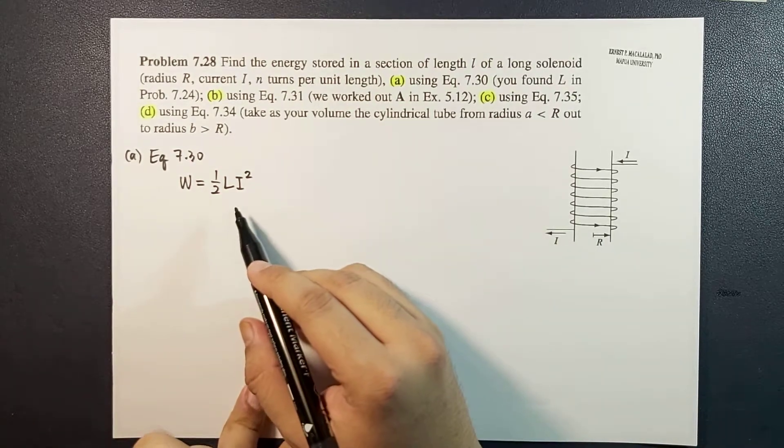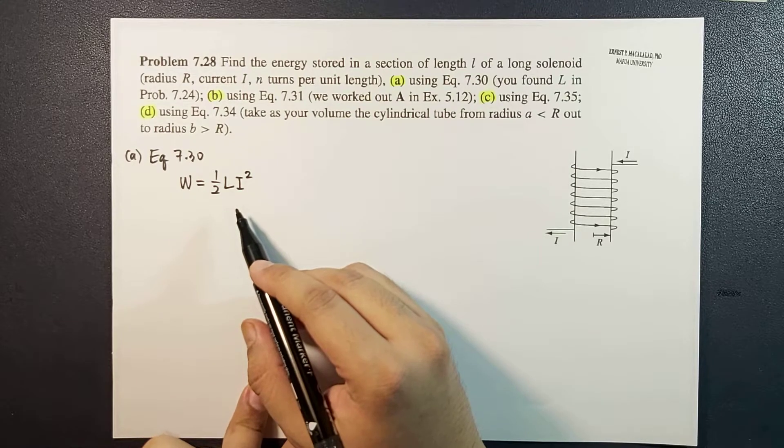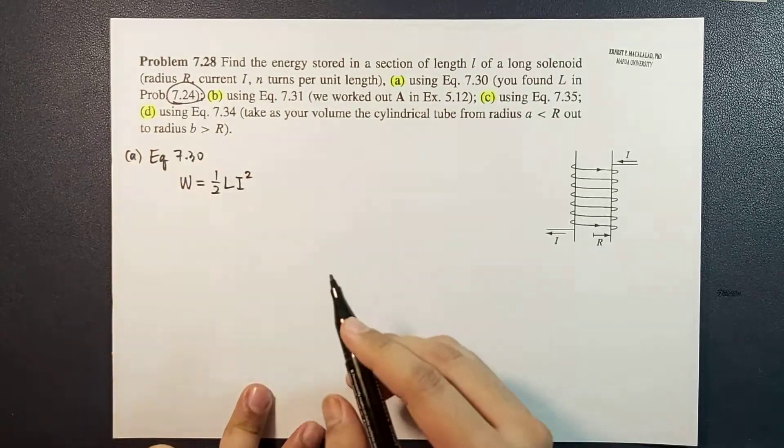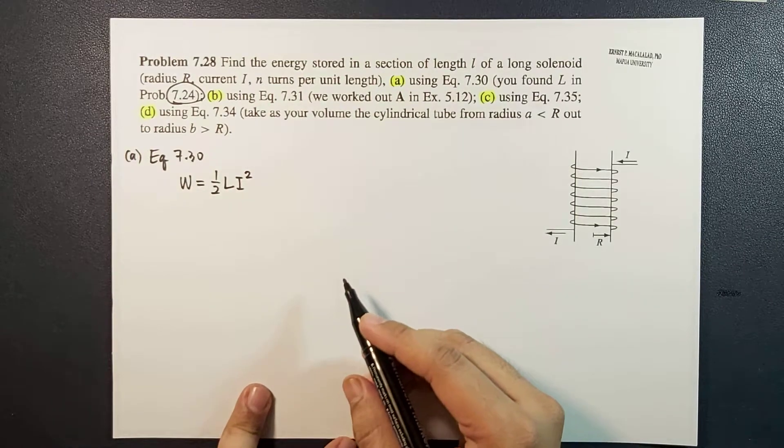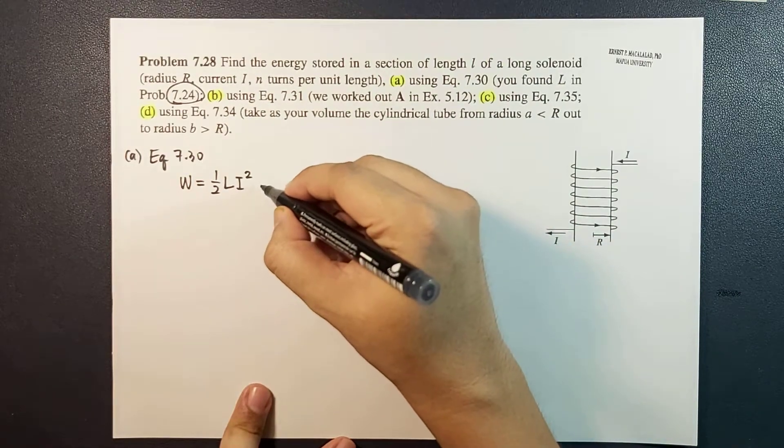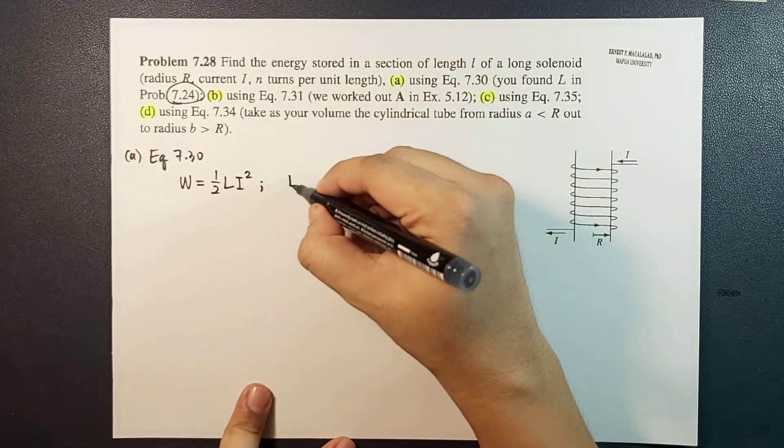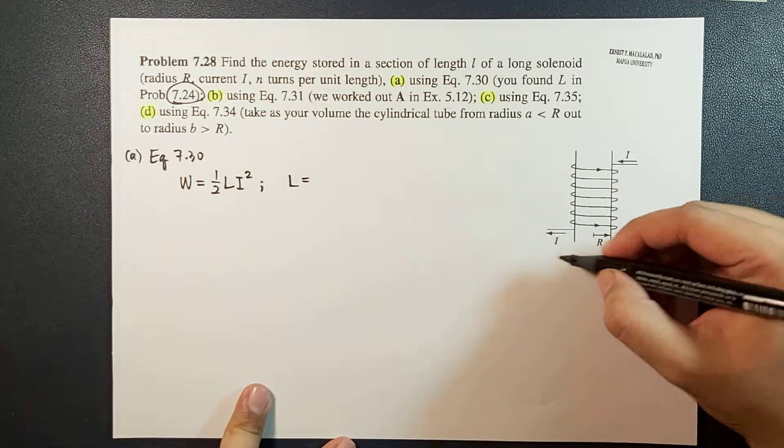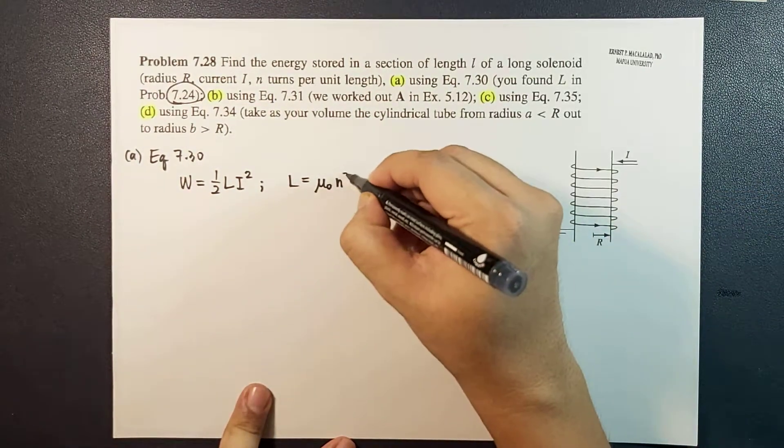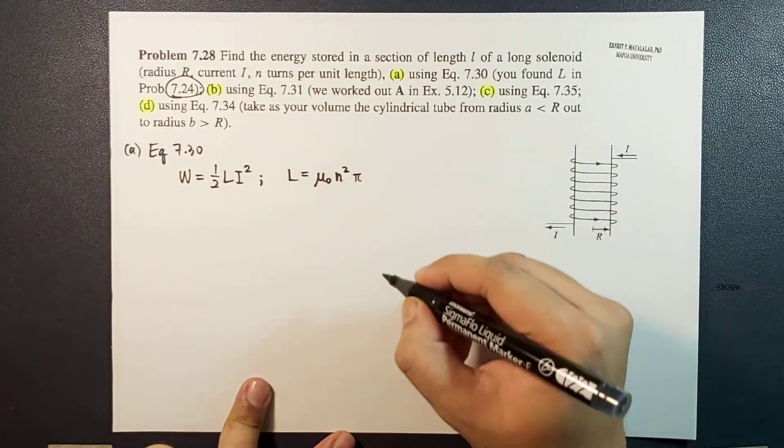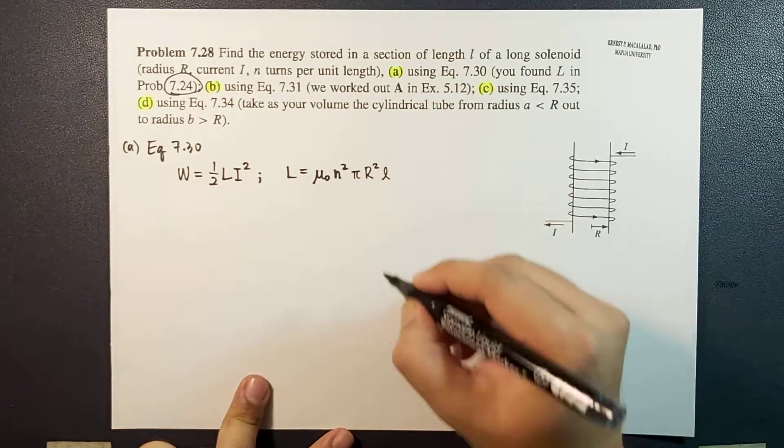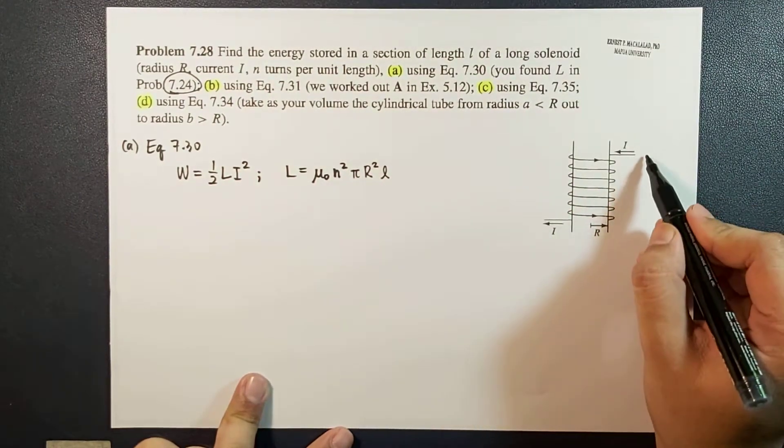From problem 7.24 we already found that the self-inductance for a solenoid is just equal to μ₀ times n squared times π times r squared times l. Here we assume that this would be your l, and within this l there are n total turns.